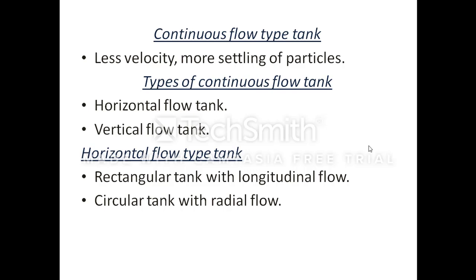The continuous flow type sedimentation tank is further classified into two types: the horizontal flow tank and the vertical flow tank. In the horizontal flow tank, the flow of water occurs in the horizontal direction. It is further classified as the rectangular tank with longitudinal flow and the circular tank with radial flow.